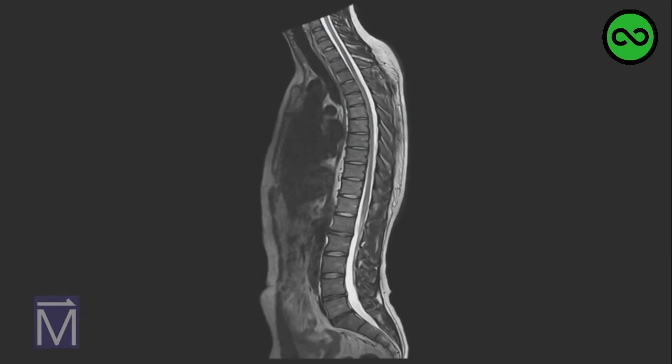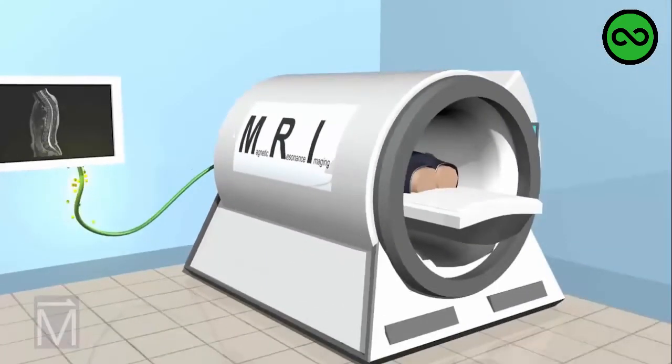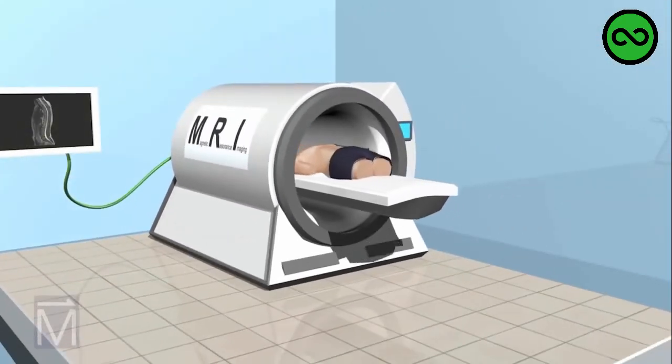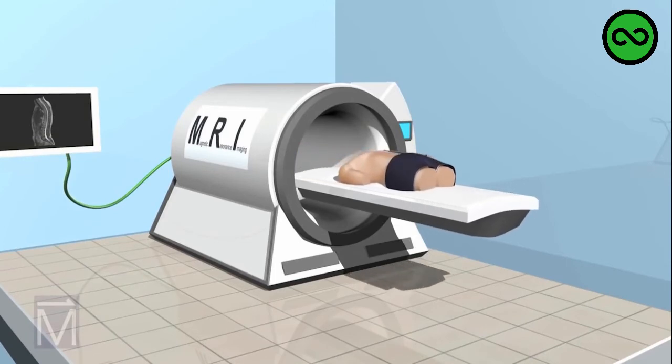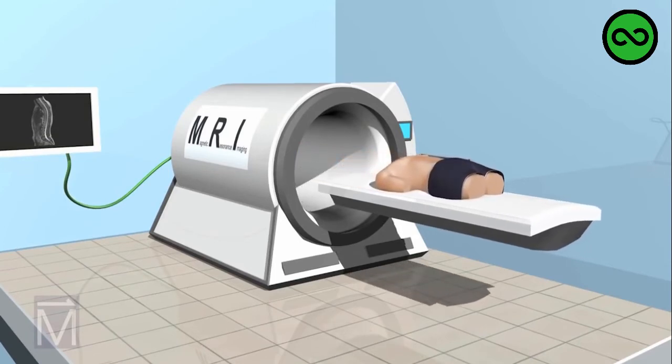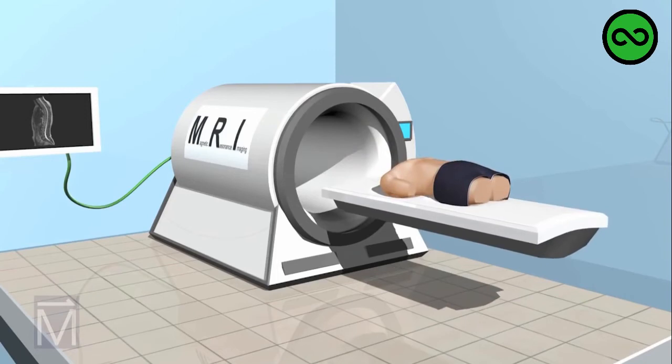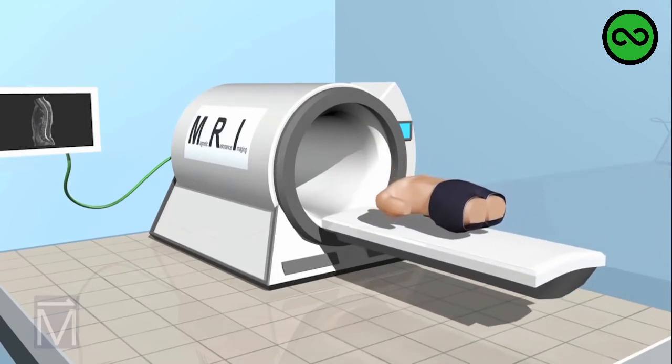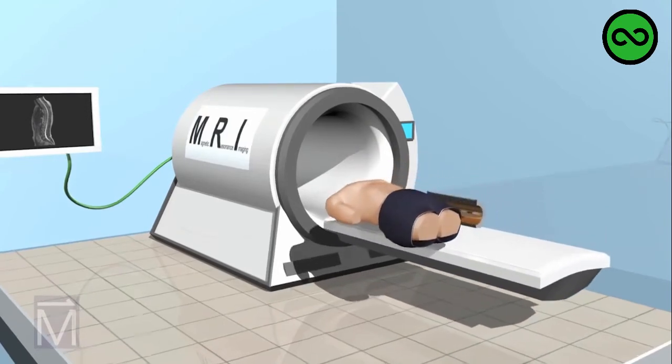Tissue with less water in it will have fewer hydrogen protons to emit signals back to the RF coils. Those areas appear darker on MRI scans. The varying signal strengths get translated into various shades of grey, which radiologists recognize as different types of tissue on the scan.